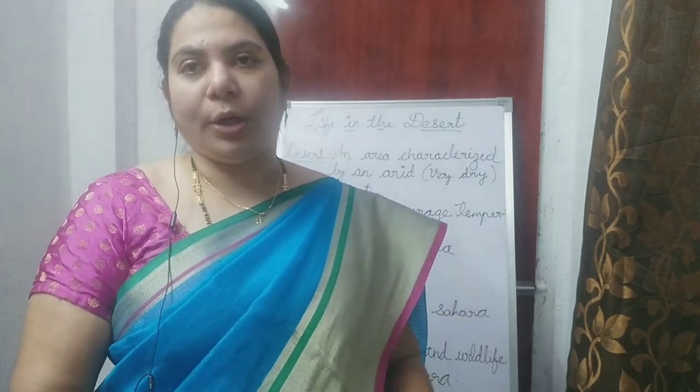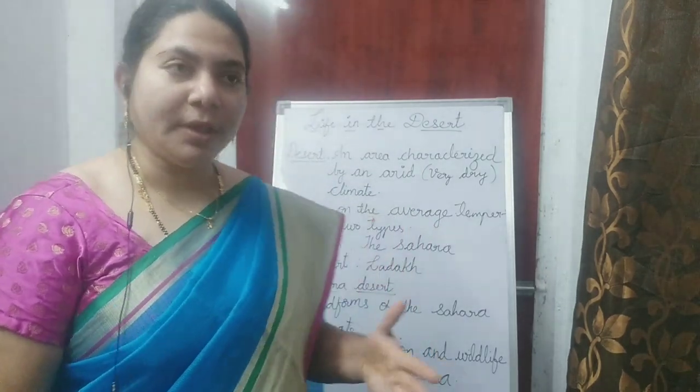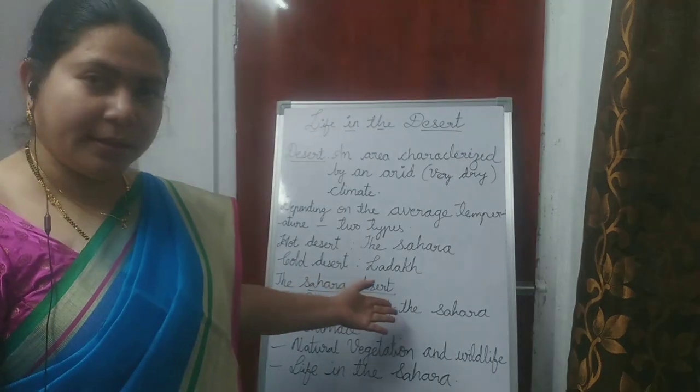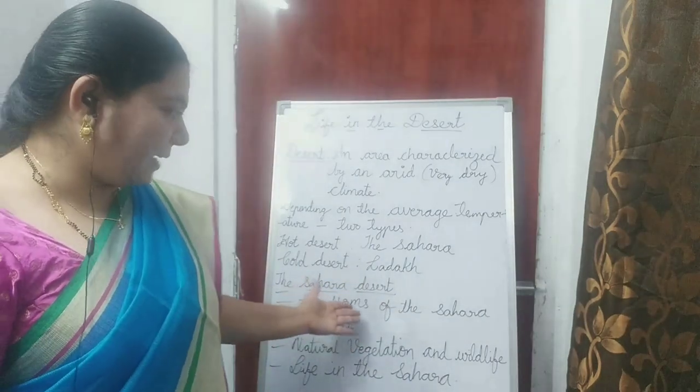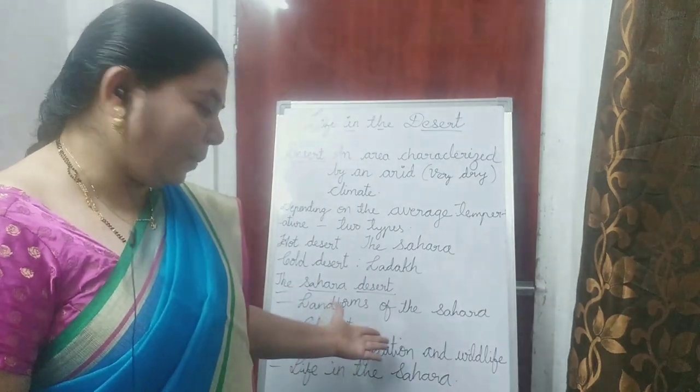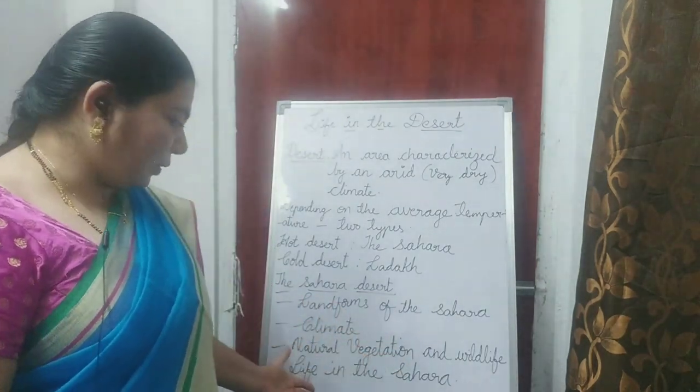In this lesson, we are going to discuss about one hot desert and one cold desert. In today's class, we'll discuss about hot deserts — which is the Sahara desert — and we'll discuss about the landforms of the Sahara, climate of Sahara, natural vegetation and wildlife of Sahara, and also life in the Sahara. In tomorrow's class, we'll discuss about Ladakh, which is in India, which is a cold desert.